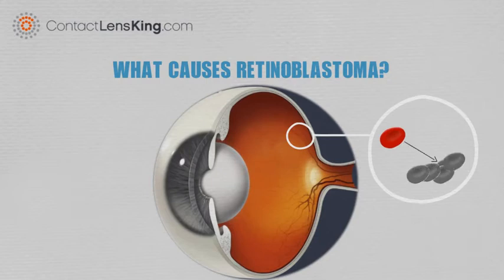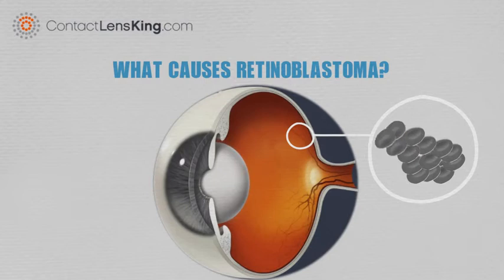This genetic mutation causes the nerve cells to multiply and grow, eventually overcoming healthy cells and causing them to die.